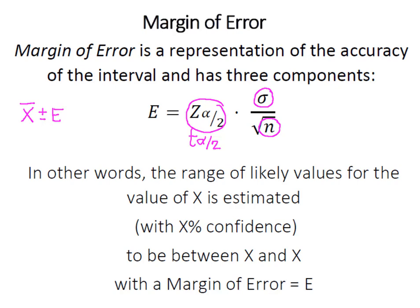In other words, the range of likely values of X is going to be estimated with whatever our desired degree of confidence is, and we're going to estimate it to be between this lower and upper boundary of our confidence interval with our margin of error equal to E.